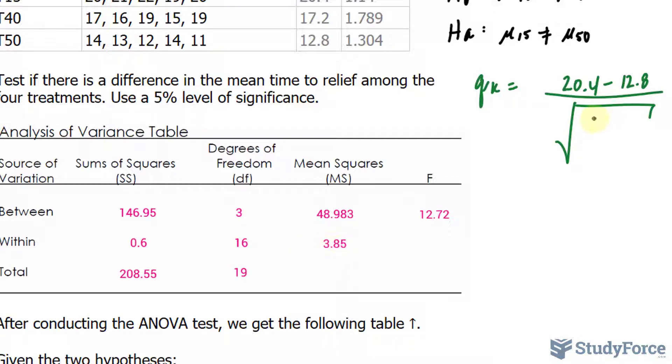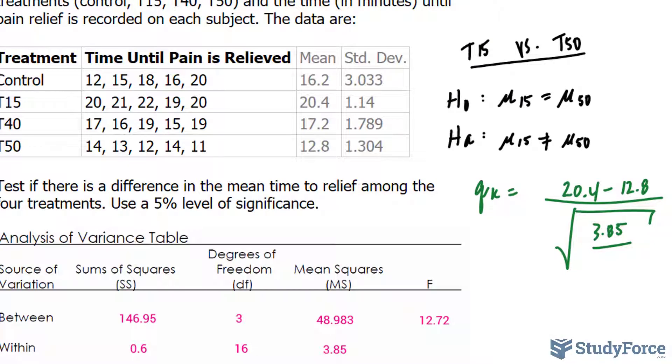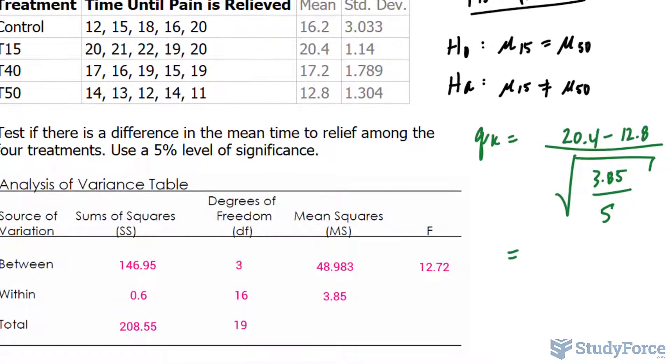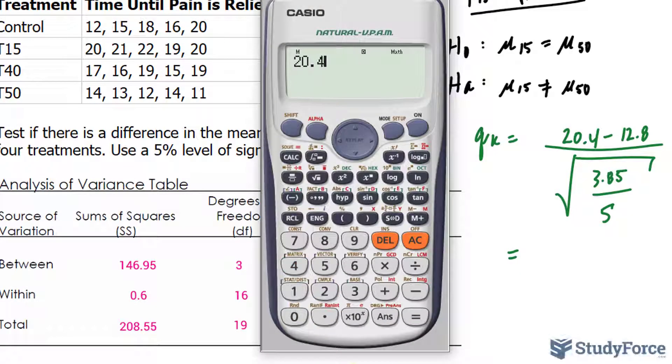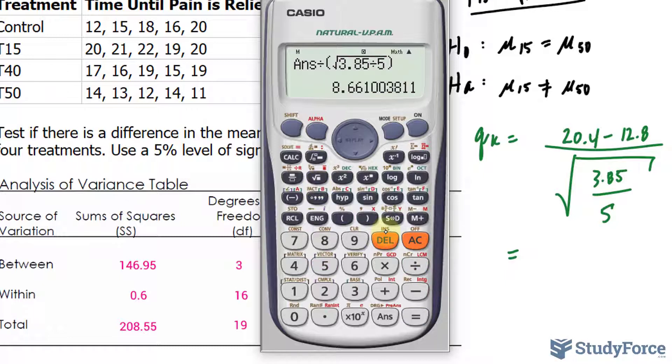This is why we created this table for the ANOVA test so that we can use this information again: 3.85 divided by how many individuals there are within the treatment group, and that's 5. This test statistic will be compared to a critical value obtained in a table. Let's use our calculator. 20.4 minus 12.8 divided by the square root of 3.85 over 5. We end up with a value of 8.66.